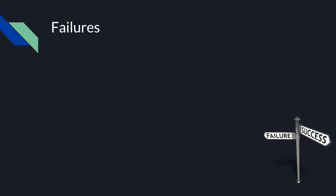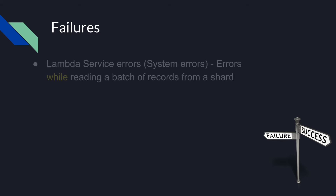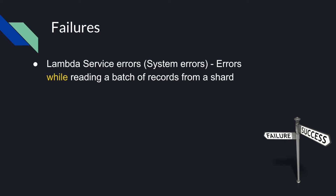When Lambda consumes a Kinesis stream, we can separate two possible failure scenarios. The first is Lambda service errors. Those errors happen when something goes wrong behind the scenes before invoking the actual Lambda function, while the Lambda service is trying to read a batch of records from a shard.